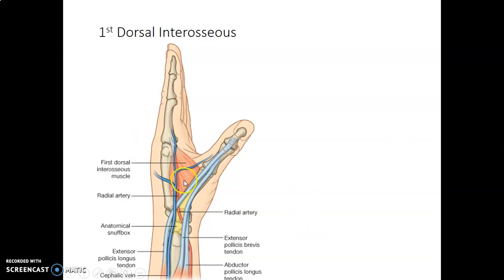The anatomical snuff box — what are its boundaries? Laterally, you have extensor pollicis brevis going to the proximal phalanx of the thumb, and abductor pollicis longus. Medially, you have extensor pollicis longus going to the base of the dorsal part of the distal phalanx. The contents include the cephalic vein and a superficial branch of the radial nerve. The base is formed by the distal part of the radius, part of the scaphoid bone and the trapezium.